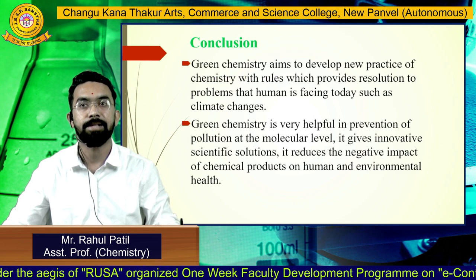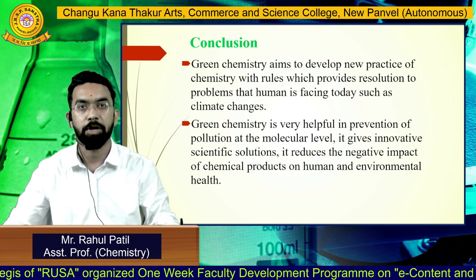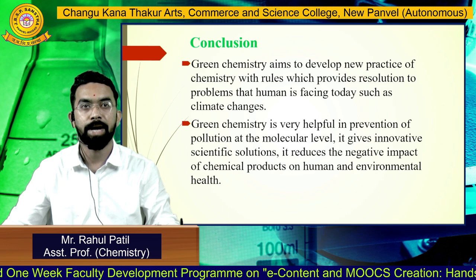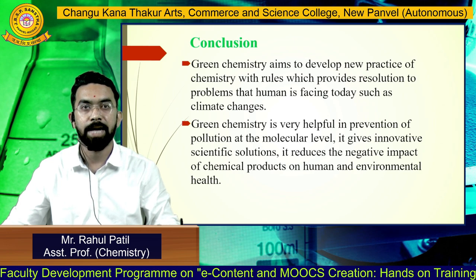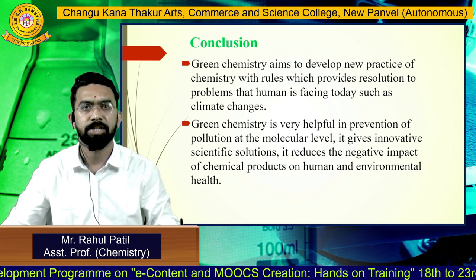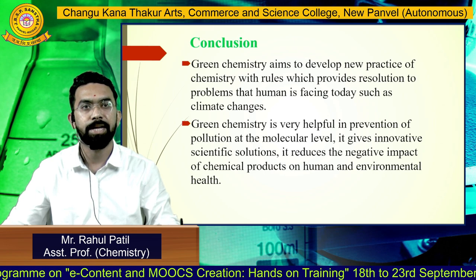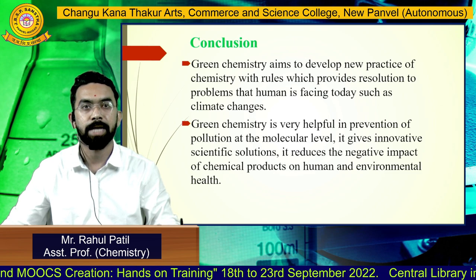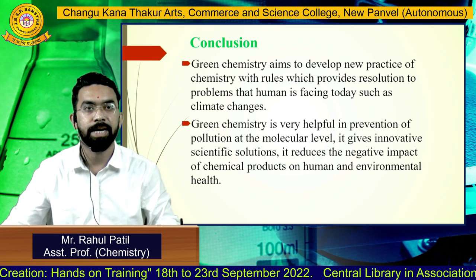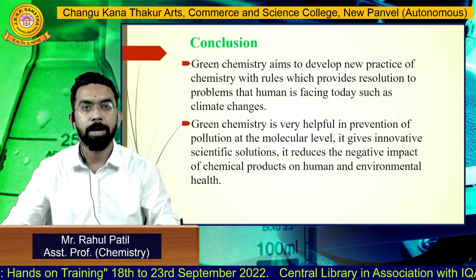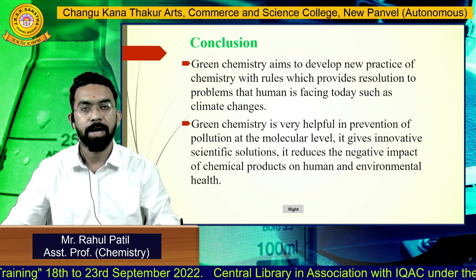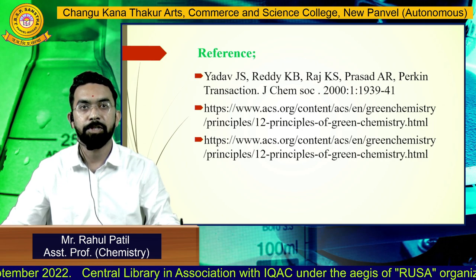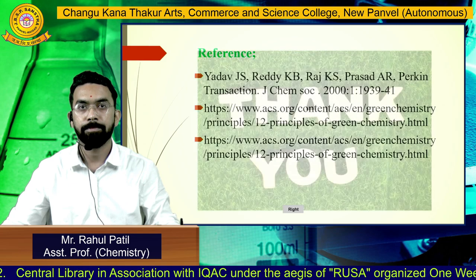Conclusion. Using these 12 principles and the concept of Green Chemistry, we can conclude that Green Chemistry aims to develop a new practice of chemistry with rules that provide resolution to problems humans are facing today, such as climate change. Green Chemistry is very helpful in the prevention of pollution at the molecular level. It gives innovative scientific solutions and reduces the negative impact of chemical products on human and environmental health. These are the references for this concept of Green Chemistry and its 12 principles. Thank you.